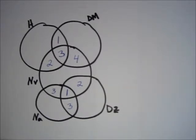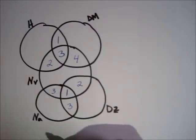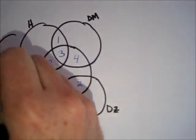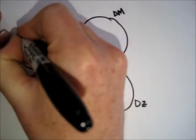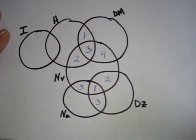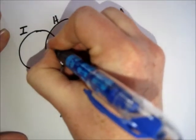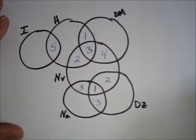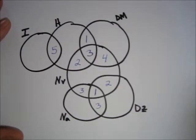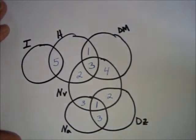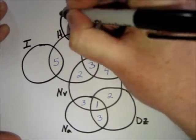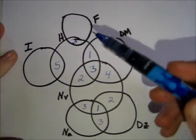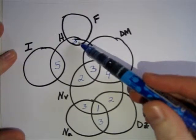Continuing up, we run into a new set: insomnia and headache. We have headache over here, but insomnia hasn't been drawn yet, so I'm going to add another circle and call it insomnia. Fatigue and headache is three people. That's another new set, so I'll add it up at the top and call it fatigue. We have three people in the intersection of headache and fatigue.